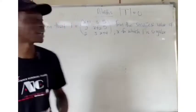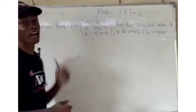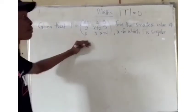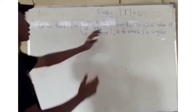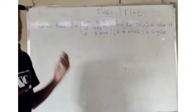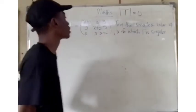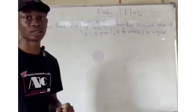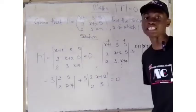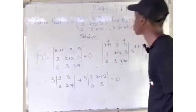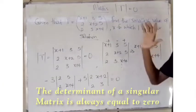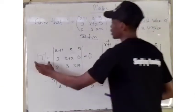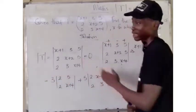Welcome back to our channel. Today we have a question on matrices that we are going to solve. Given that T is a 3 by 3 matrix with all the elements, we should find the smallest value of x for which the matrix T is singular. To solve this, the first thing we need to know is that for a singular matrix, the determinant is always equal to 0. So the determinant of this matrix T will give us 0.